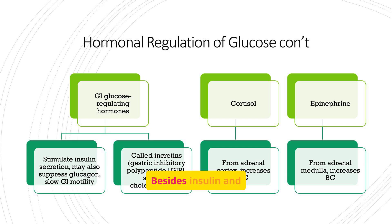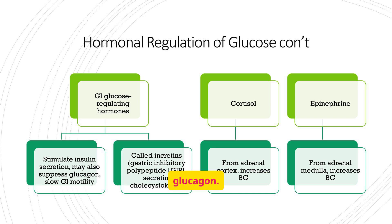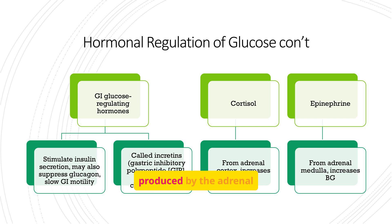Besides insulin and glucagon, other hormones also regulate glucose levels. GI hormones stimulate insulin secretion and may suppress glucagon. Cortisol and epinephrine, produced by the adrenal glands, both increase blood glucose levels.